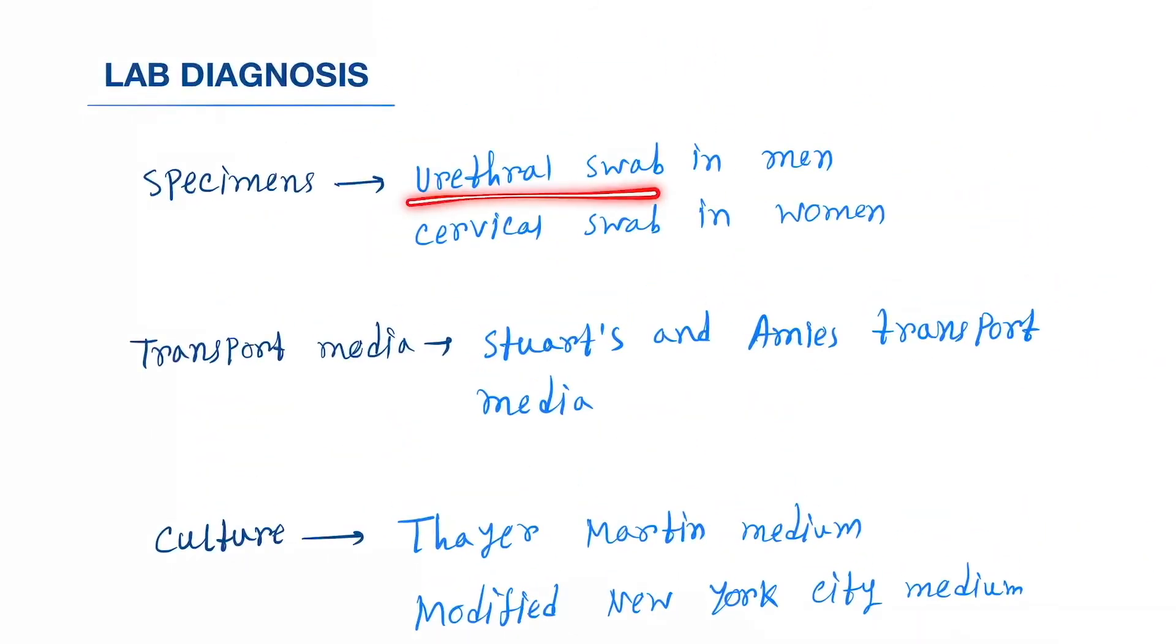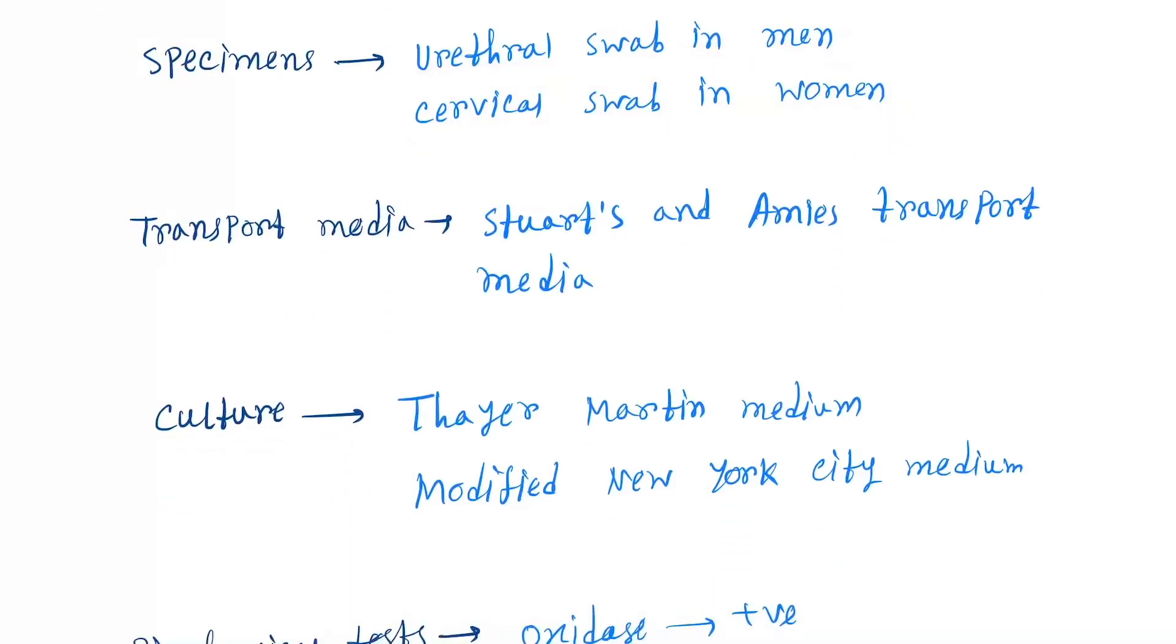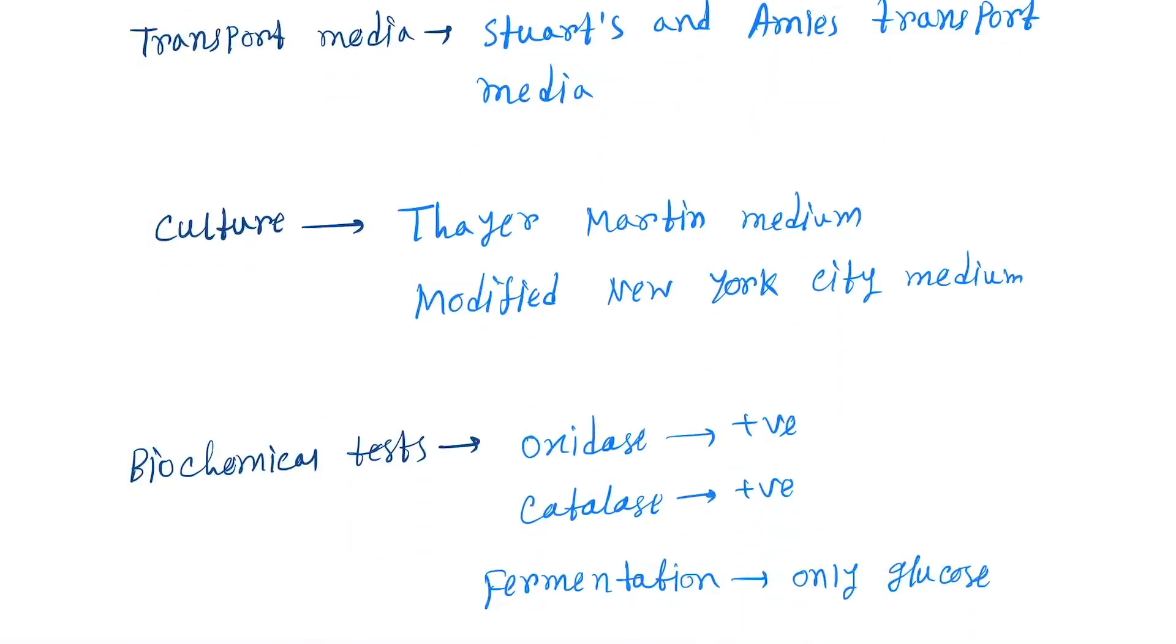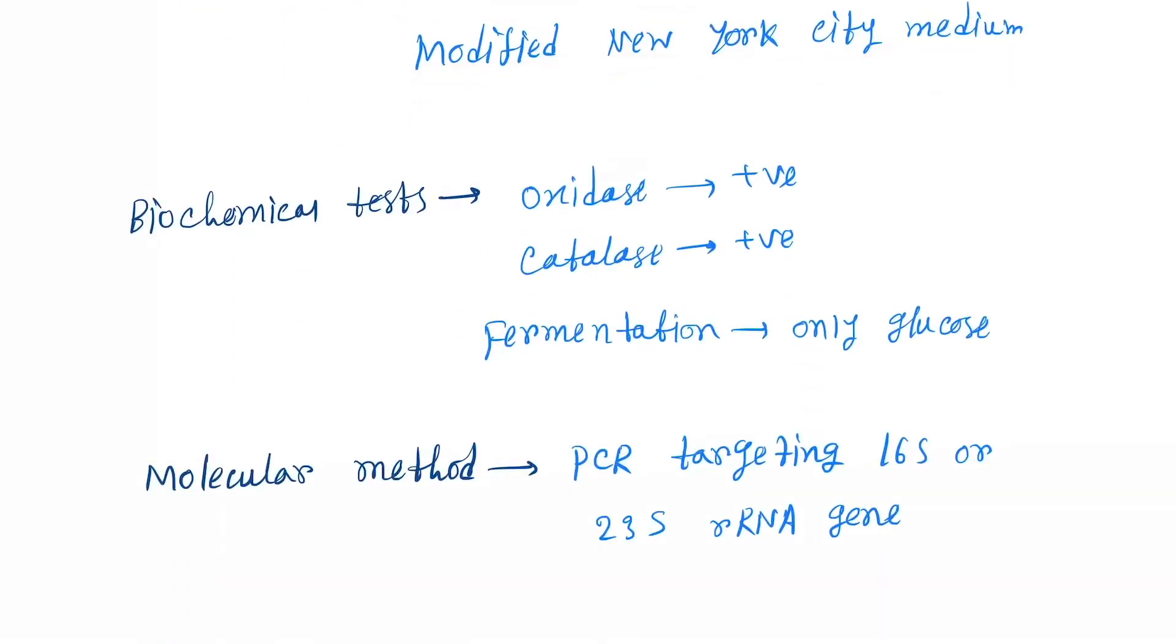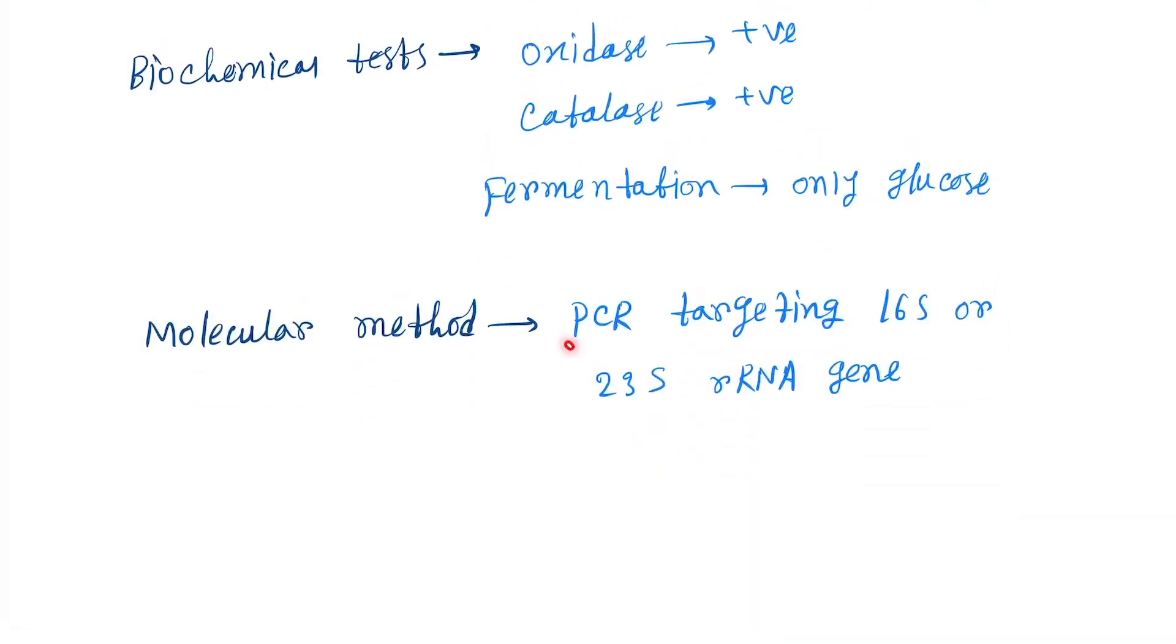Lab diagnosis: specimen is urethral swab in men, cervical swab in women. Transport media: Stuart's and Amies media are used. Culture: Thayer-Martin medium, modified New York City medium. Biochemical test: both are catalase and oxidase positive, fermentation only glucose. Molecular methods targeting 16S rRNA.